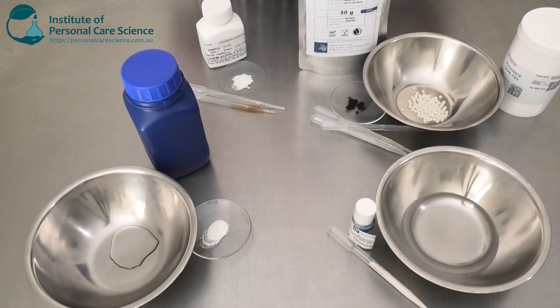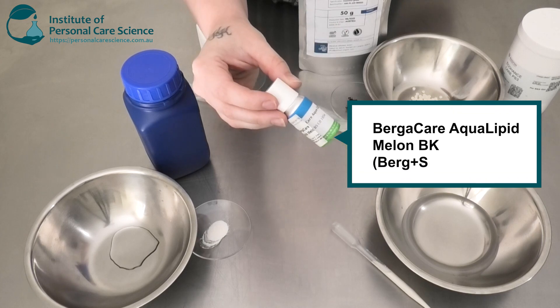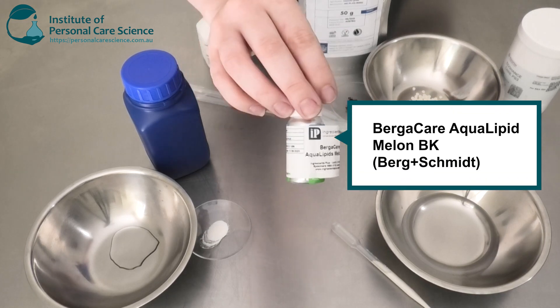Okay, so here I have all my phases. Now to start, I'm going to be adding to my water phase the Burger Care Aqua Lipid, and this is the Melon Grade.